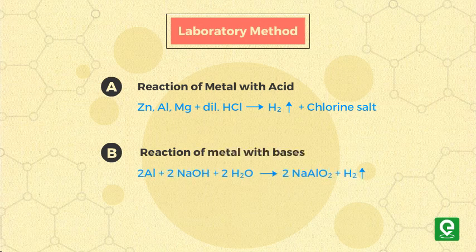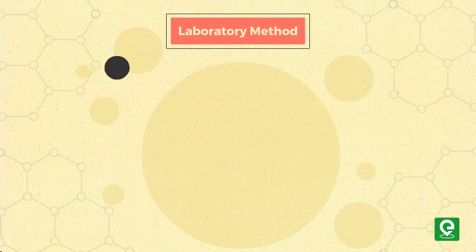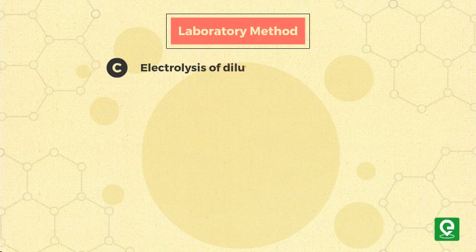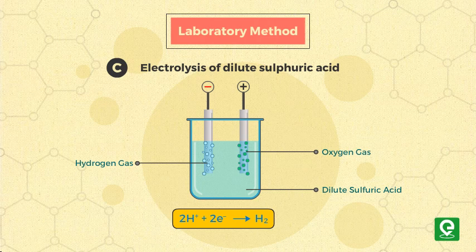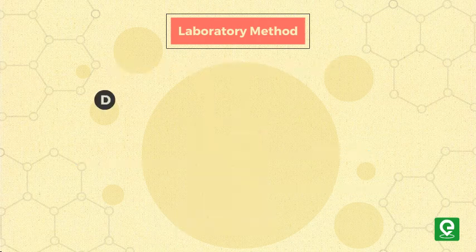Method B: reaction of metal with bases. Aluminium or zinc react with sodium hydroxide to produce hydrogen gas. Method C: electrolysis of dilute sulfuric acid or dilute sodium hydroxide using platinum electrodes results in generation of hydrogen gas at the cathode.